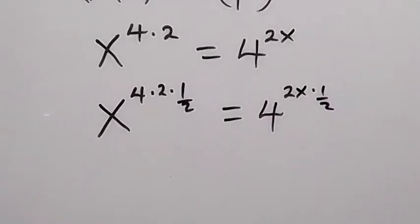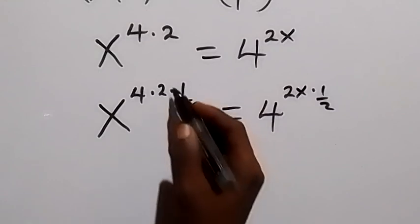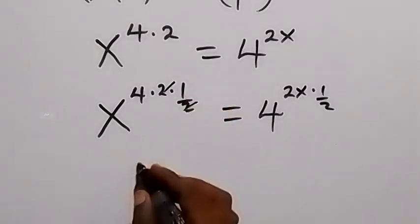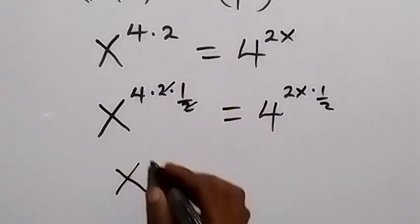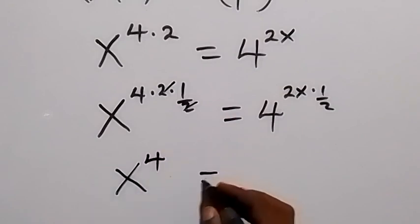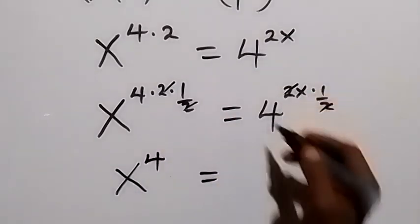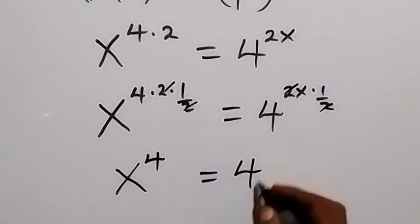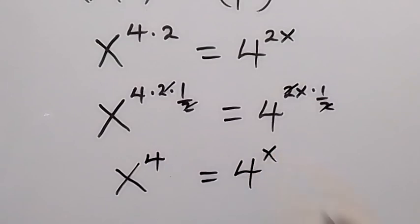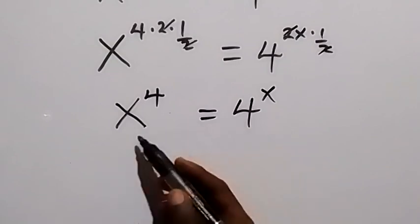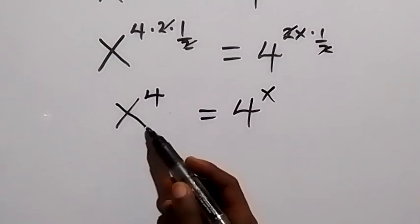The 2 will cancel with 2 here, so this will become x raised to power 4. And on the right side, canceling the 2 gives us 4 raised to power x. So we now have x raised to power 4 equals 4 raised to power x.